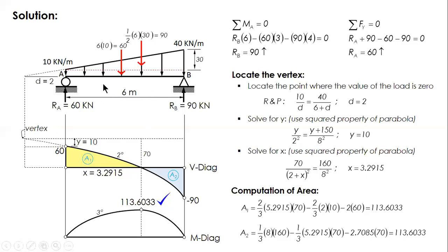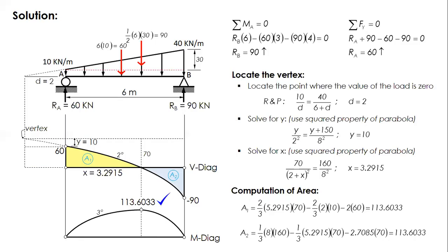Cut a section, label the shear and moment, define the distance x, analyze the left side, sum forces vertically, equate shear to zero to solve for x, then sum moments. This is much easier. It depends on the student — if you don't like the method of sections, use the area method, or vice versa. I hope that if you've encountered this type of problem and found it difficult, this presentation has made it clear. Thank you for watching.